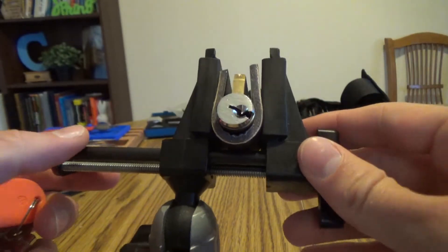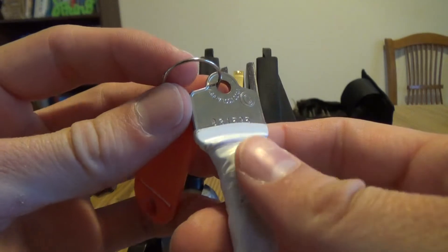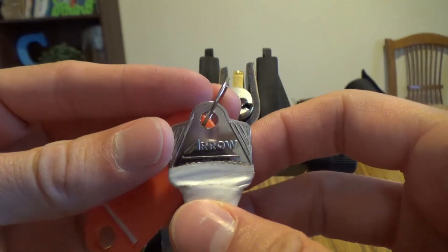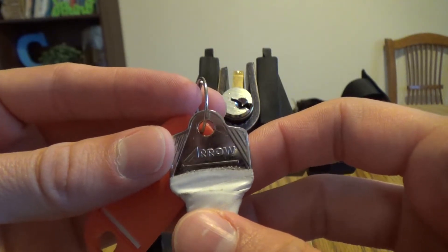So it's the Schlage keyway, the SCE I think. But it's the arrow key and knob cylinder. Hey, you can see me. I'm right there.